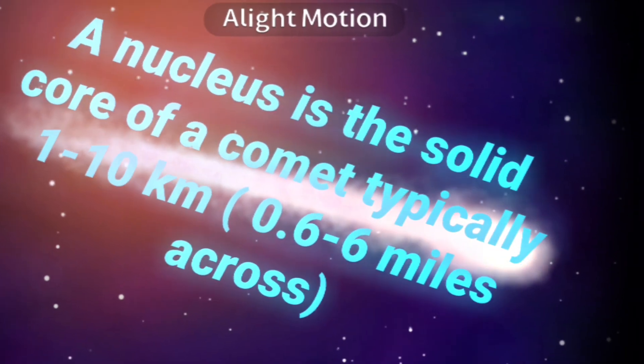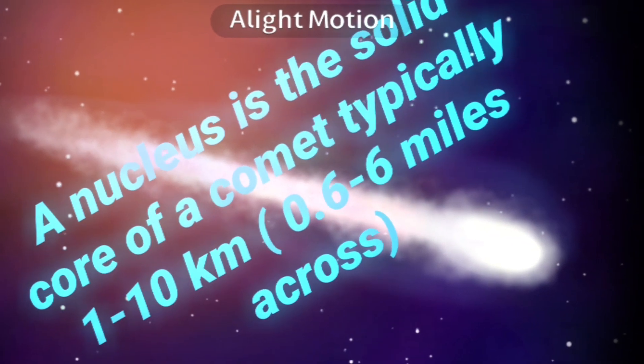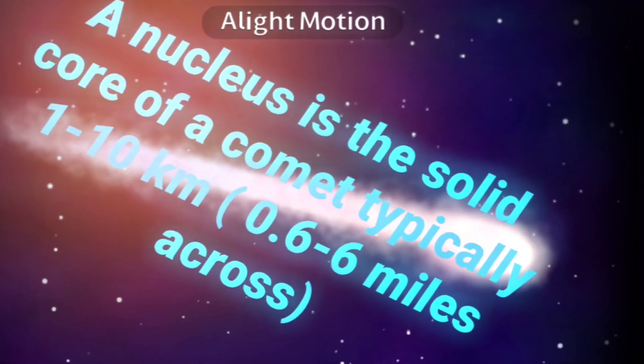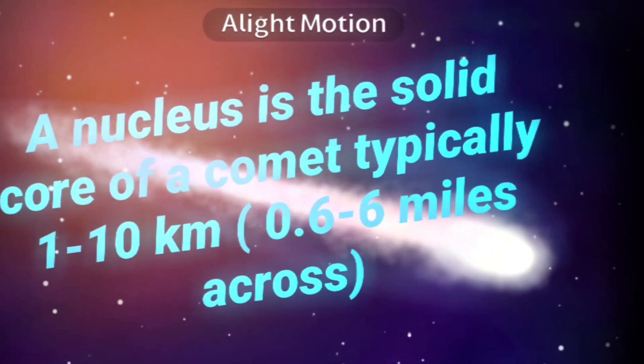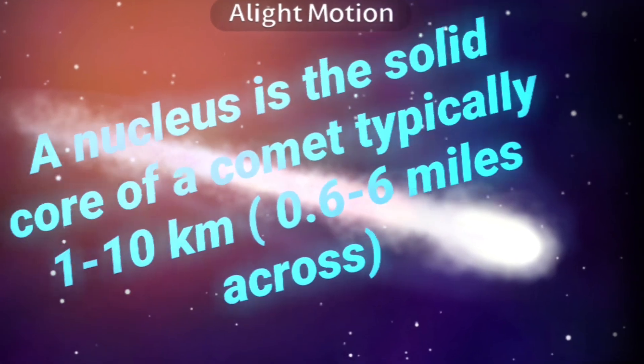So, a nucleus is the solid core of a comet, typically 1 to 10 kilometers, 0.6 to 6 miles by the way, across.